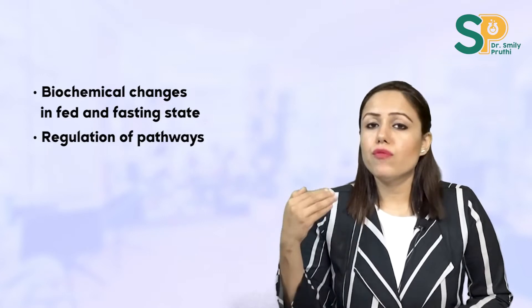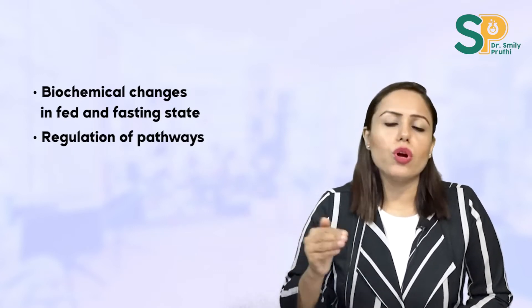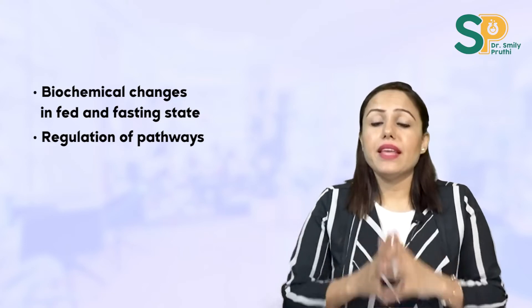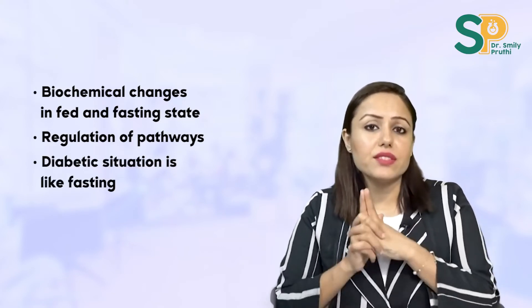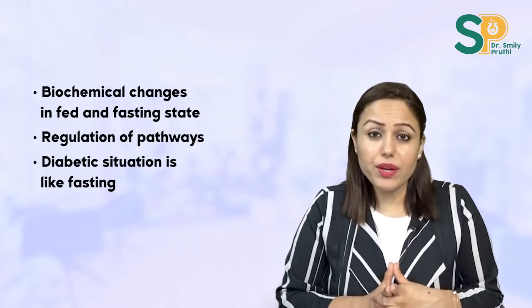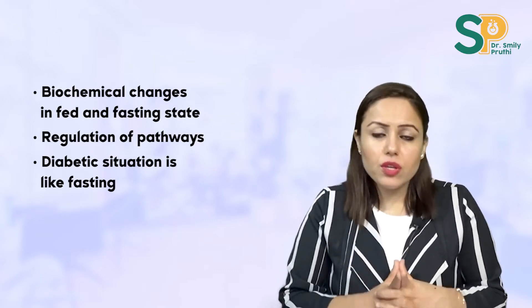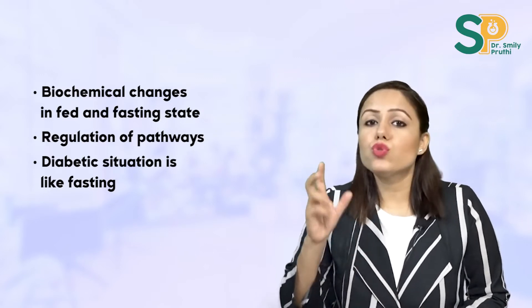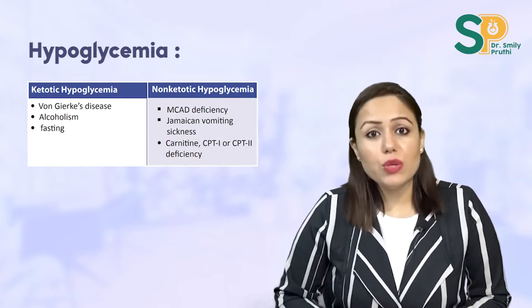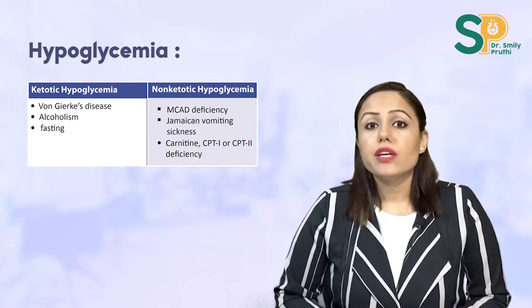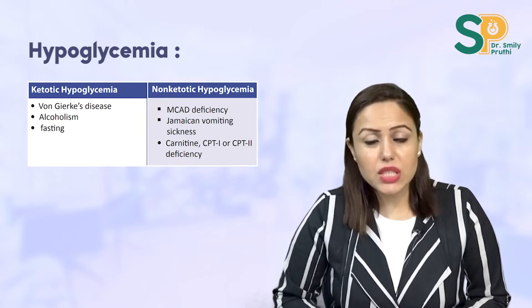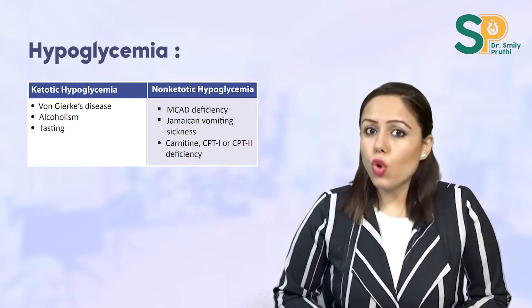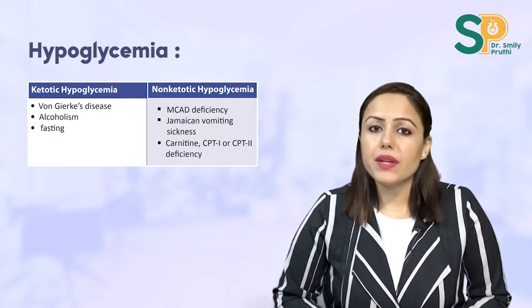Read biochemical changes in diabetes — the diabetic condition is similar to the fasting condition. Once you understand the biochemical changes of fasting, you can use those to solve questions on diabetes. Also do hypoglycemia: ketotic hypoglycemia occurs in fasting, von Gierke's disease, and alcoholism; non-ketotic hypoglycemia occurs in MCAD deficiency, Jamaican vomiting sickness, and carnitine deficiency.